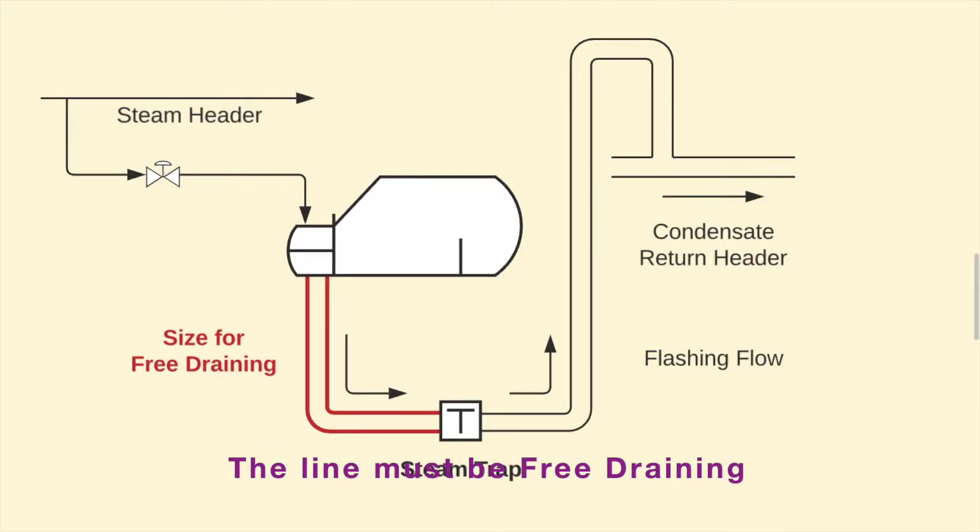The inlet line for a steam trap needs to provide two functions. It must drain water, and it must let the vapor flow back up the piping. The line needs to be free draining.